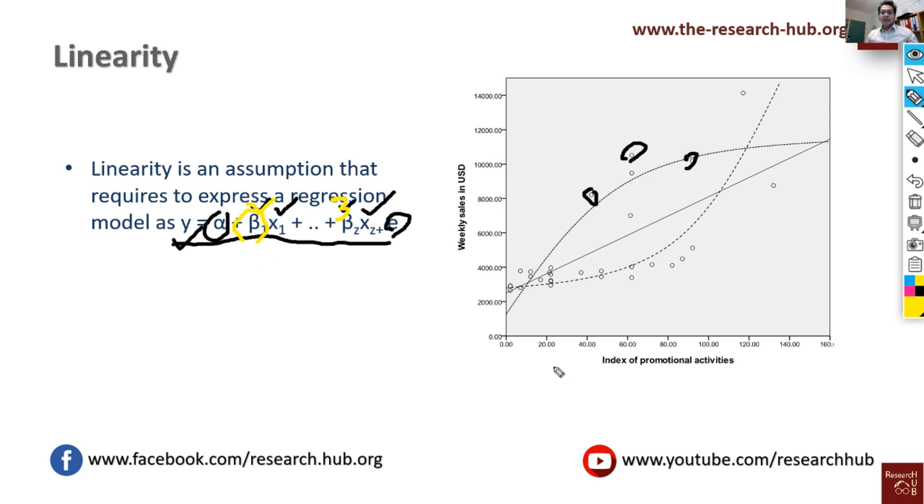What it means is that if one unit increase in promotional activities increases sales by 10, two unit increase will increase sales by 20, three unit increase will increase sales by 30. So the value will be just multiplied with the unit, but the parameter remains the same.